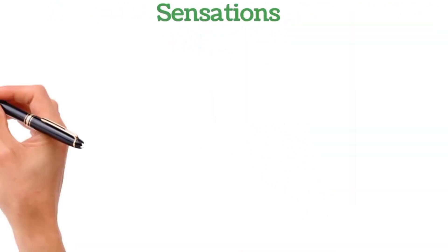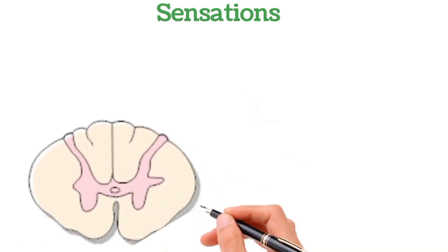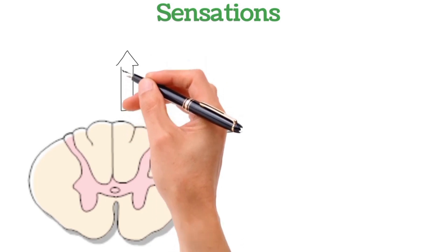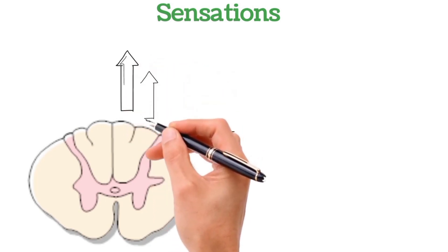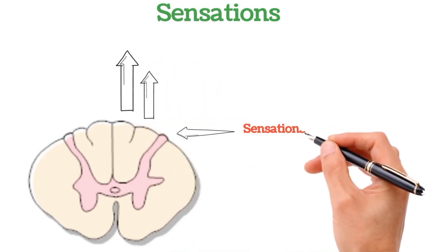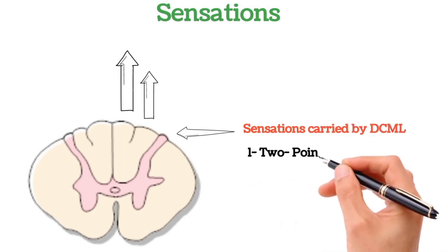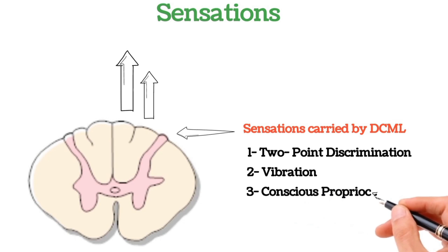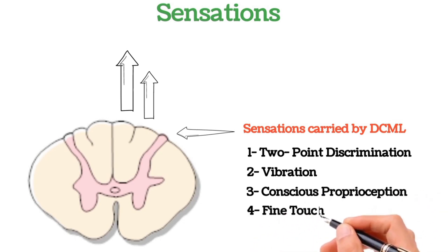Now we will discuss the sensations carried by dorsal column medial lemniscus system. These sensations enter the spinal cord through dorsal root and ascend in fasciculus gracilis and fasciculus cuneatus. These sensations carried by DCML are number one two point discrimination, two vibration, three conscious proprioception, four fine touch and five pressure.